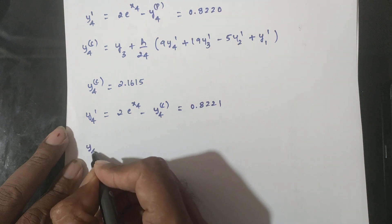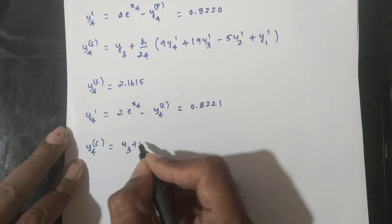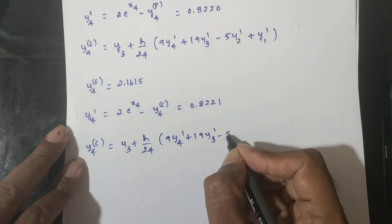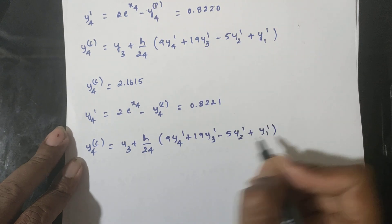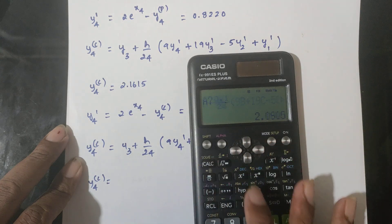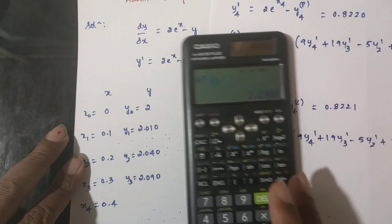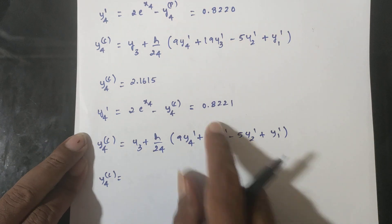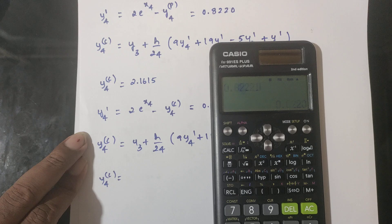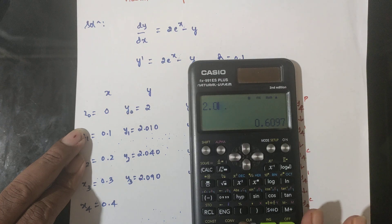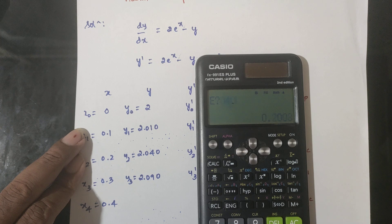Next apply the corrector formula: Y4C = Y3 + (h/24)(9y4' + 19y3' − 5y2' + y1'). Here y3 = 2.090, y4 dash = 0.8221, y3 dash = 0.6097, y2 dash = 0.4028, y1 dash = 0.2003. Result: Y4C = 2.2522.